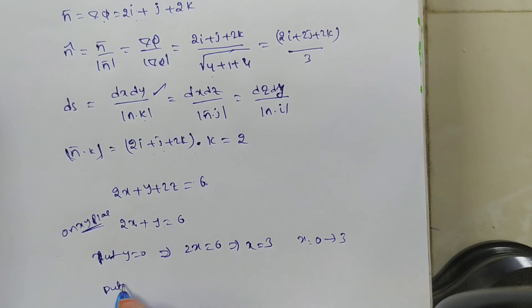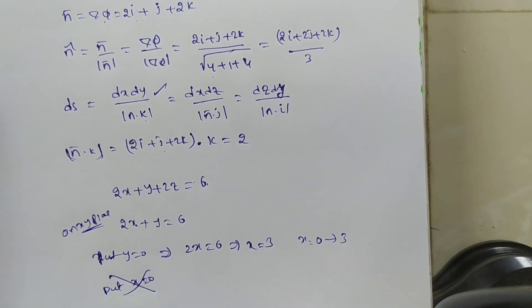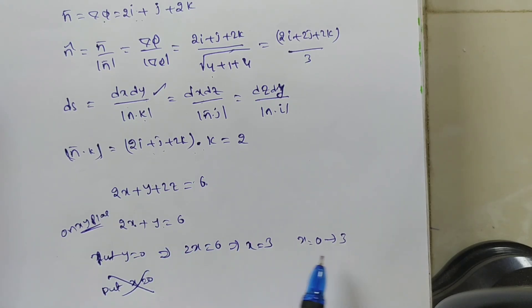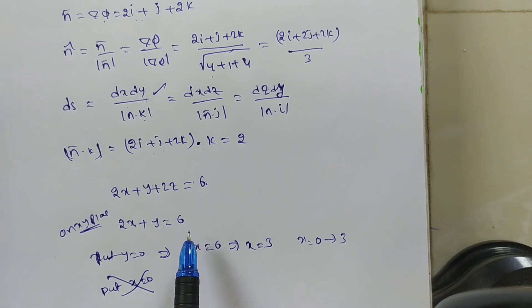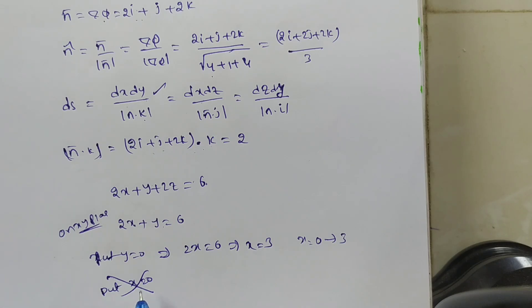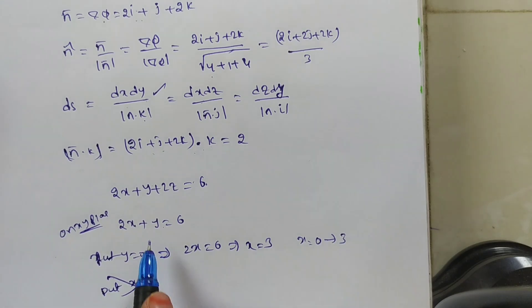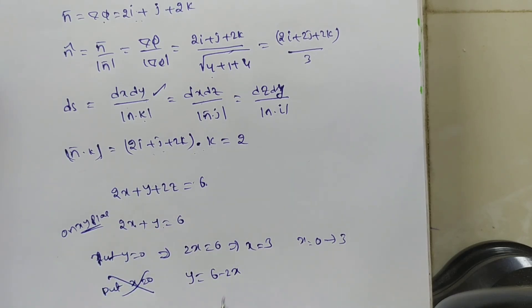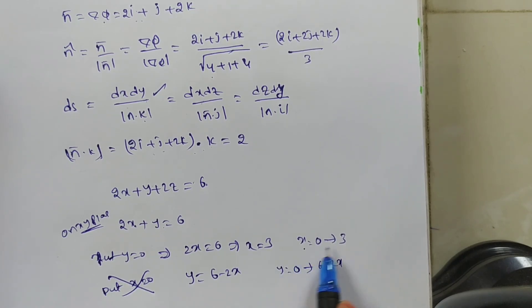Next I need y limits. If you put x = 0, y = 6, but if y is simply 0 to 6, you get a rectangle — which is not our region. So keep y on the left side: y = 6 − 2x. So y goes from 0 to 6 − 2x. Now x is independent and y is dependent on x.